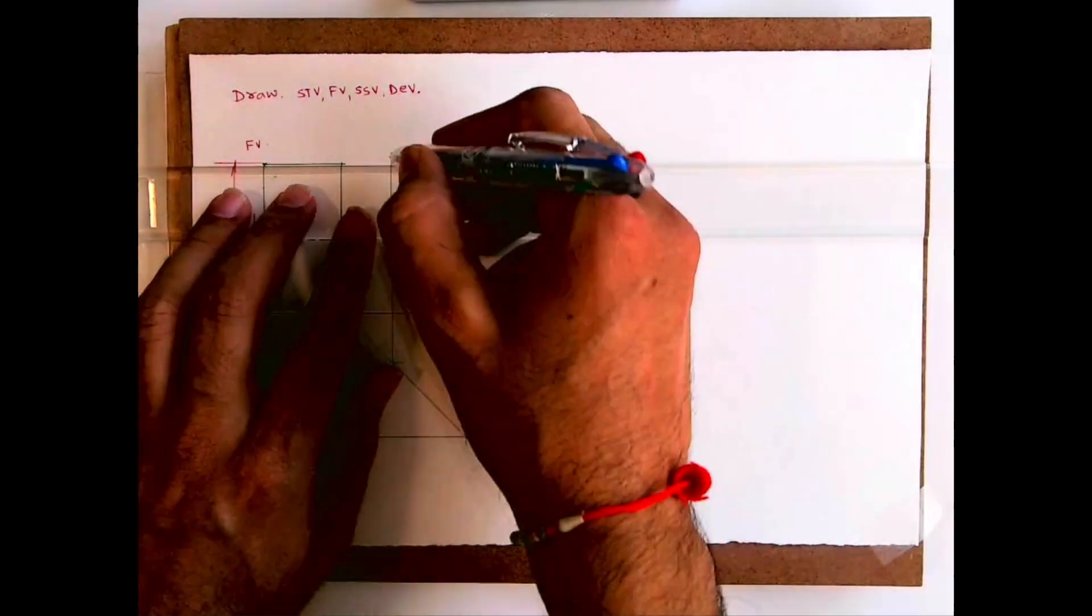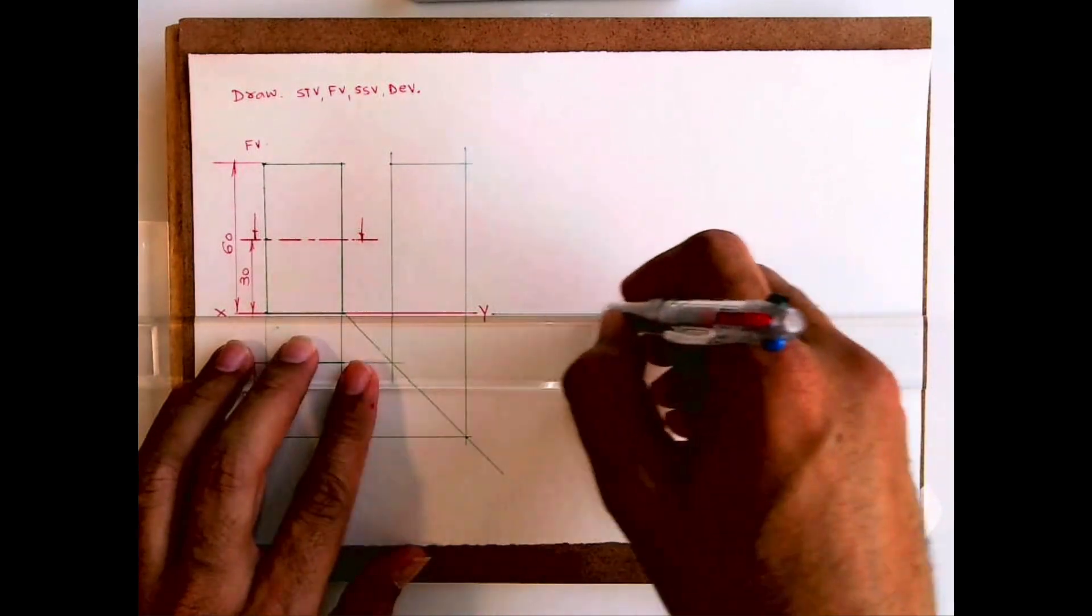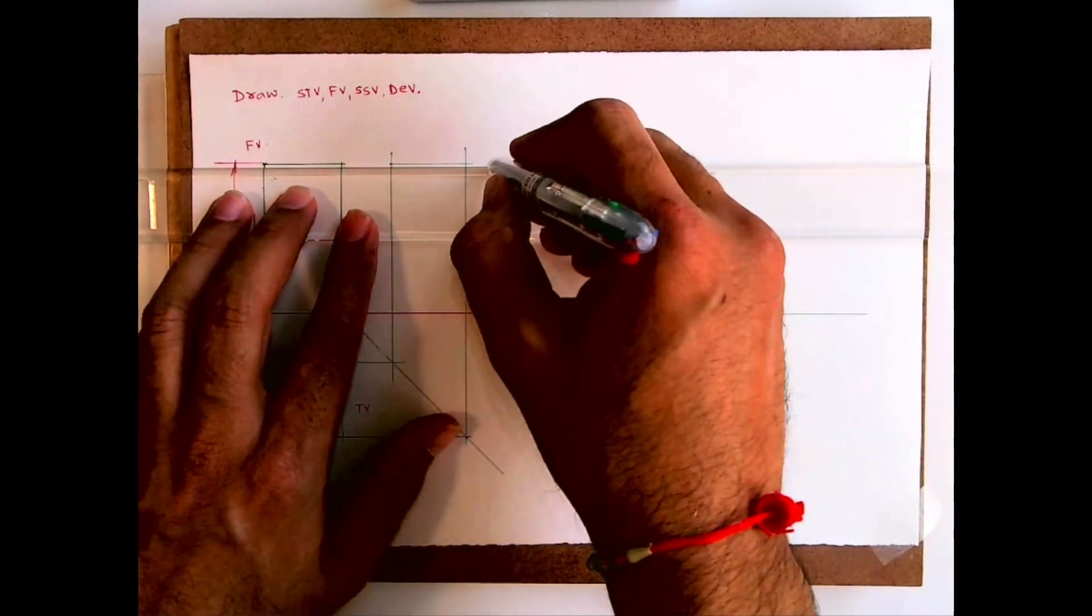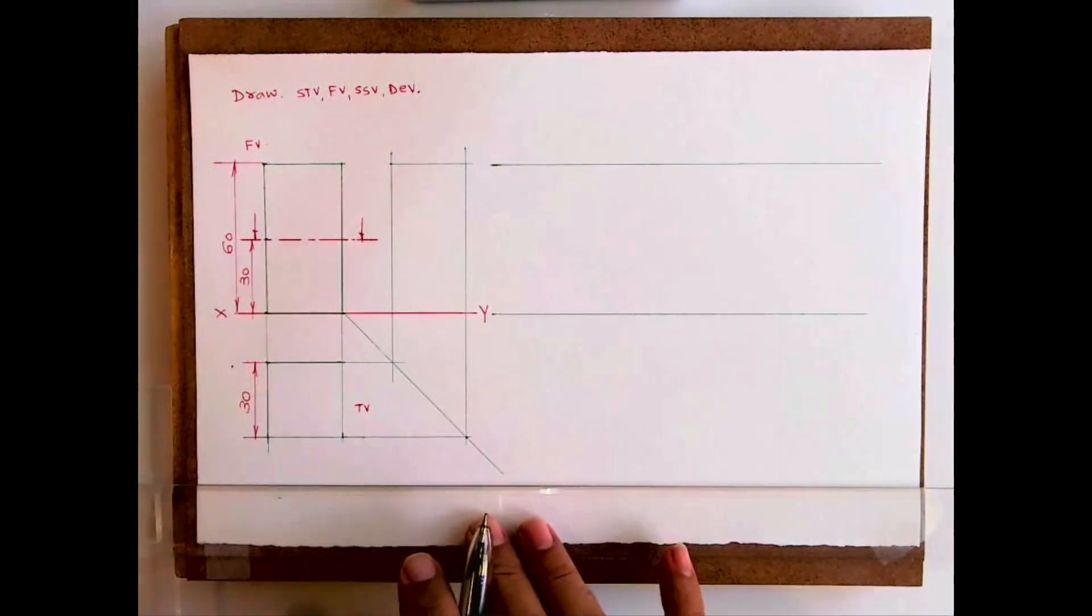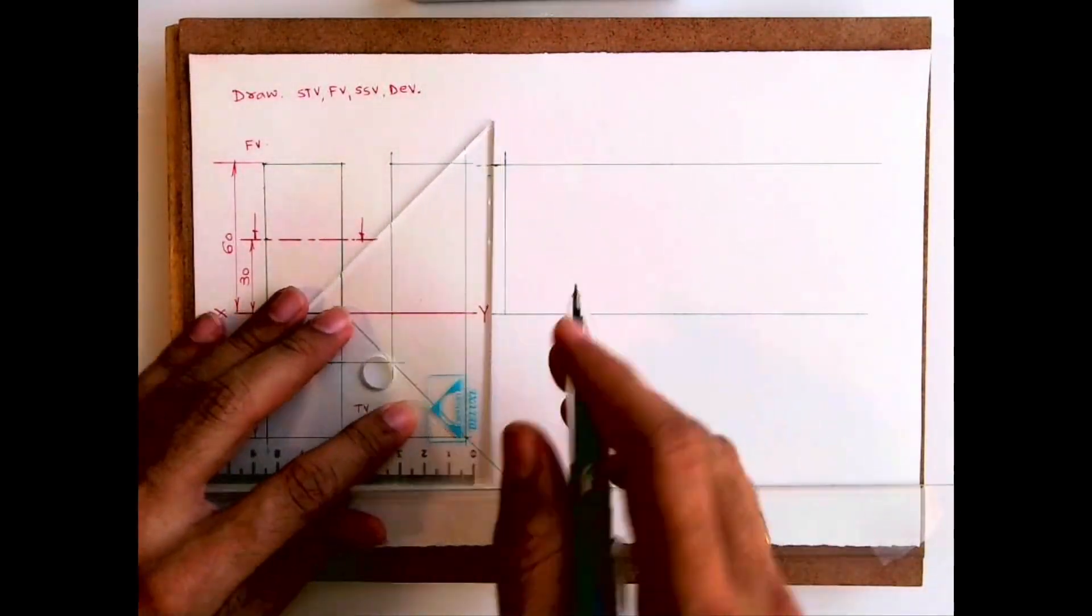So we got front view, top view, and side view. Now we'll draw development. What do you mean by development? When you open it, how it should look. See, first we will draw a line like this at any distance from XY. Any distance we can draw one vertical line.